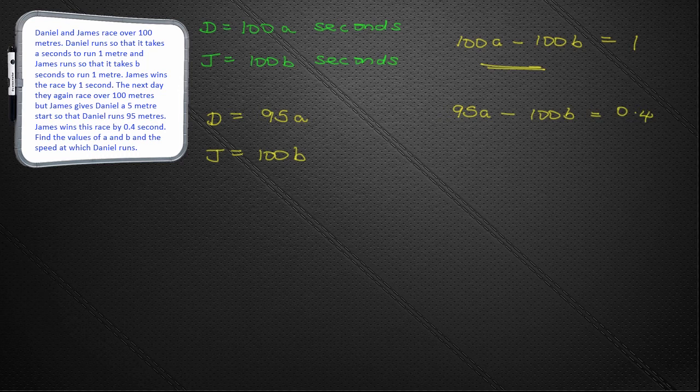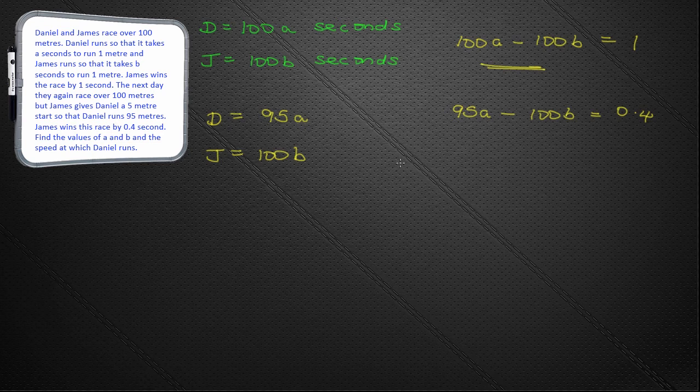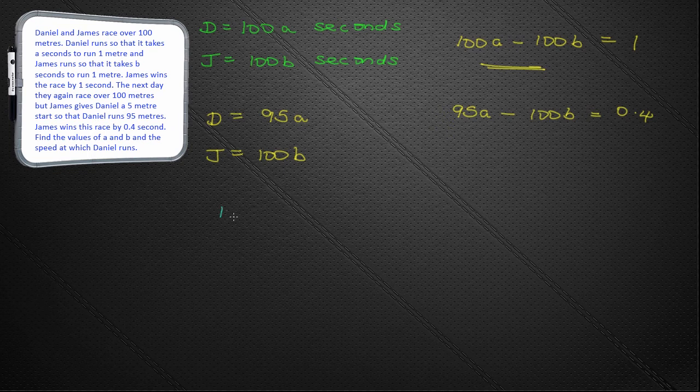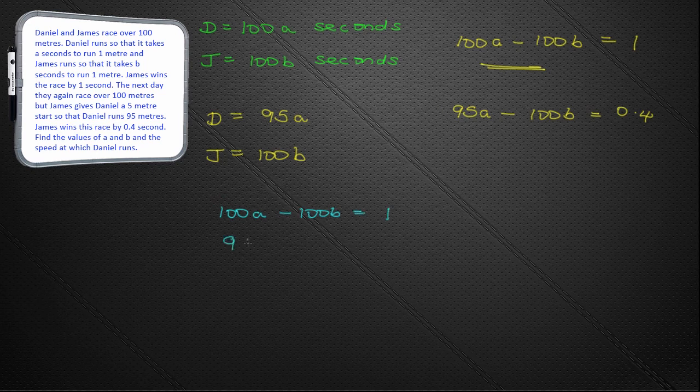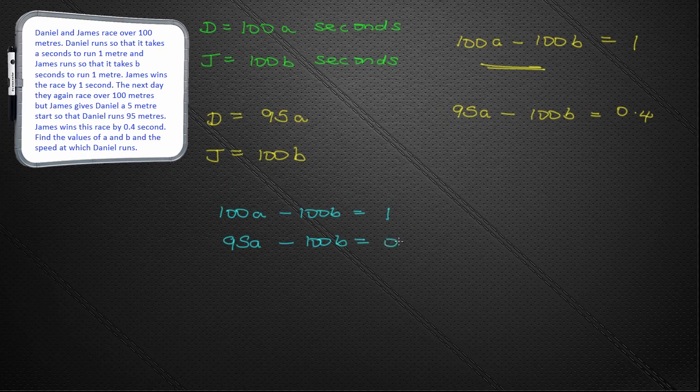Well, we could go on and draw this graph. But, let's actually use algebra because the values could be nicer. And, let's just use the idea of simultaneous equations. So, we have 100A minus 100B is equal to 1. And, 95A minus 100B is equal to 0.4.